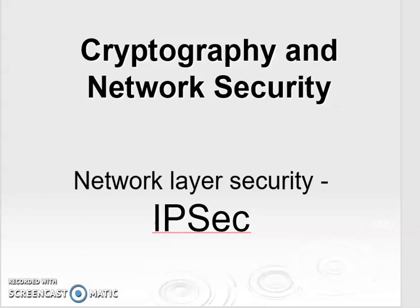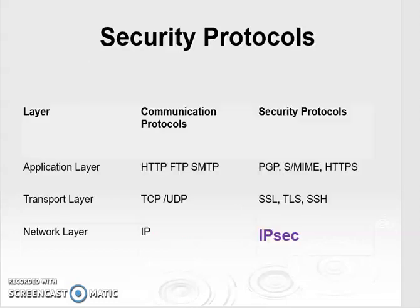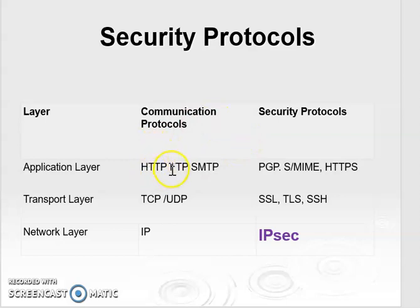Now let us glance through the security protocols at the different layers like application layer, transport layer and the network layer. At the application layer, the communication protocols which are used are HTTP, FTP and SMTP, and the security is provided by the protocols PGP, SMIME and HTTPS.